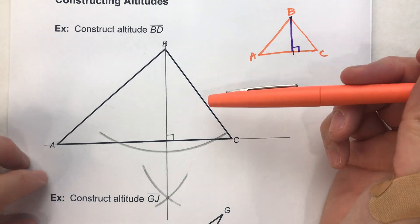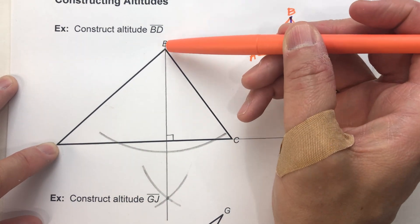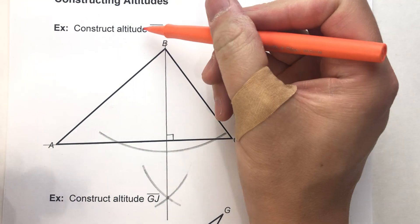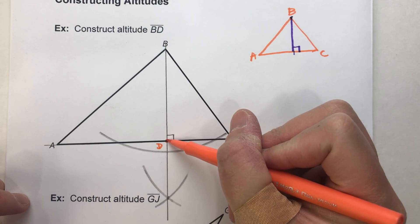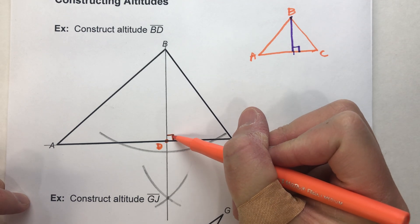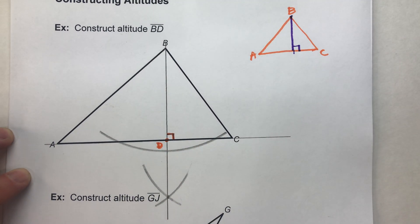And that's all we really need for an altitude, a perpendicular through that point B. We do need to name it segment BD. Here's B, so this will be D. This point right here will be D. And we know it's perpendicular there. And this is my altitude.